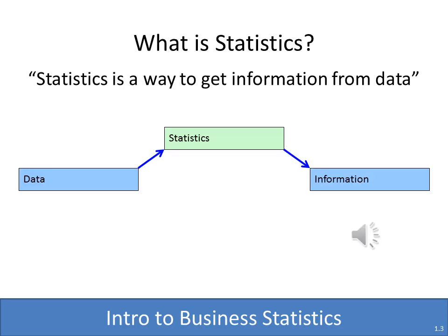Statistics is a way to get information from data. Data is just the raw numbers — it doesn't make a lot of sense. So in this case, we use statistics to give us information. Information is data that makes sense.